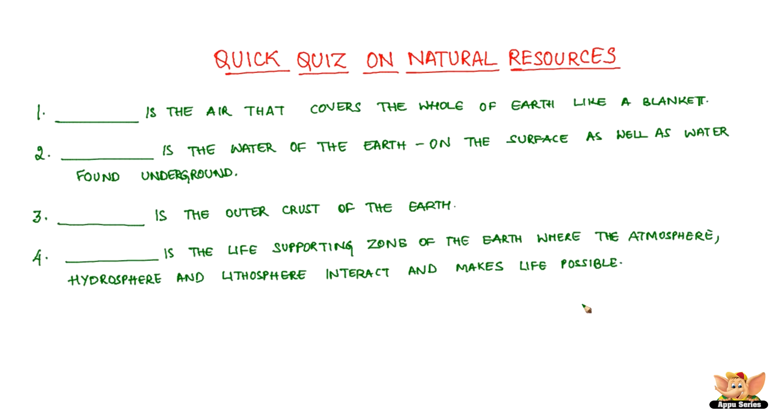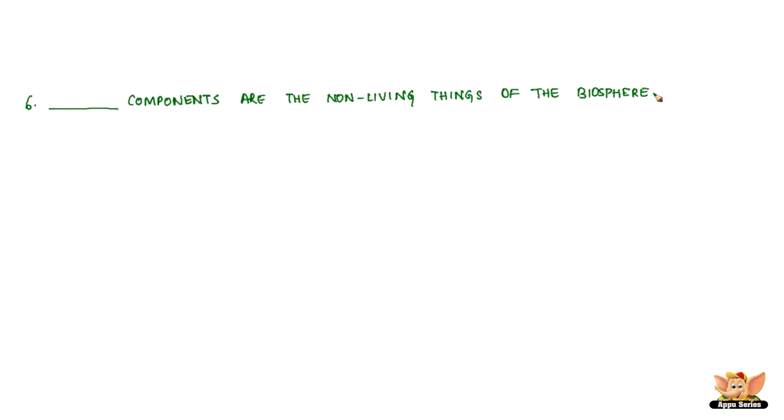Dash is the life supporting zone of the earth where the atmosphere, hydrosphere and lithosphere interact and make life possible. Dash components are the living things of the biosphere. Dash components are the non-living things of the biosphere.